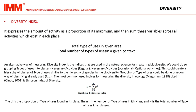These classes are: necessary activities regular, necessary activities occasional, and optional activities. This creates a hierarchy of classes of types of uses similar to the hierarchy of species in biodiversity. Grouping of types of uses can be done using the classification already established.